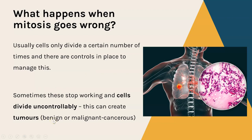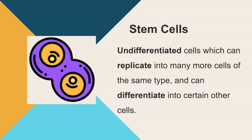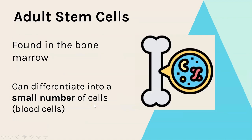In this video we're going through stem cells for GCSE biology. A stem cell is an undifferentiated cell which has the ability to continually replicate into the same type of cell, but can also differentiate - meaning to become a specialized cell. Plants have stem cells found in the meristems, which are the actively growing parts of a plant such as the tips of the roots and the growing regions in the stem. Plant stem cells can differentiate into any plant cell throughout their entire life.